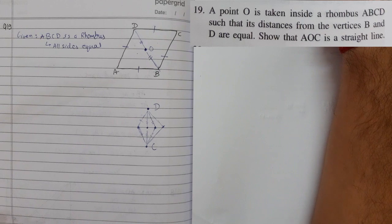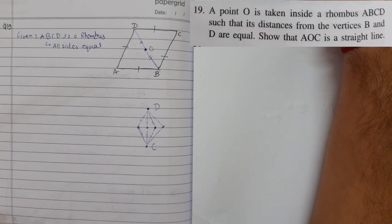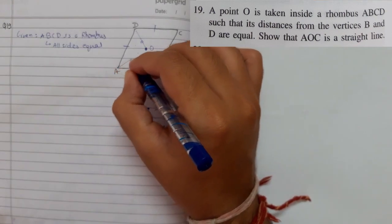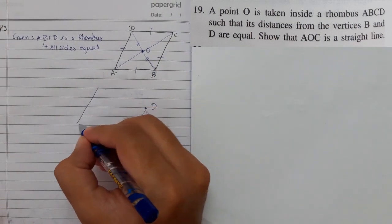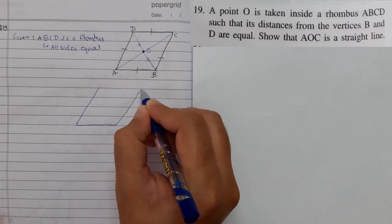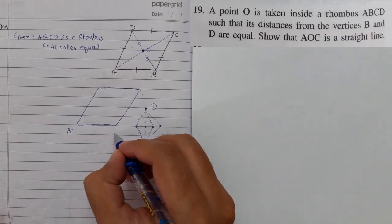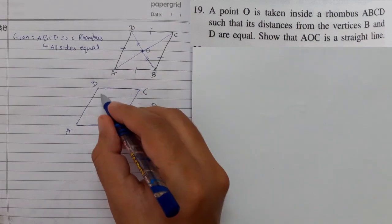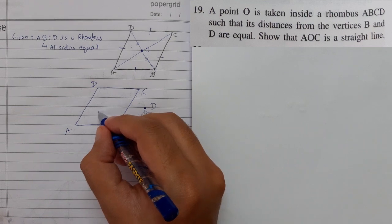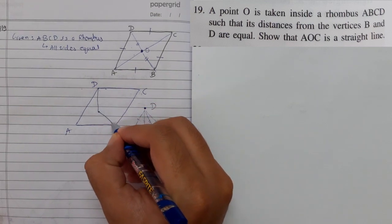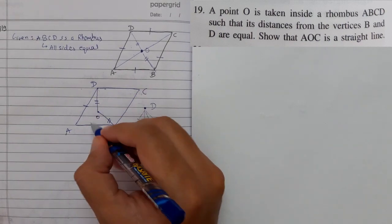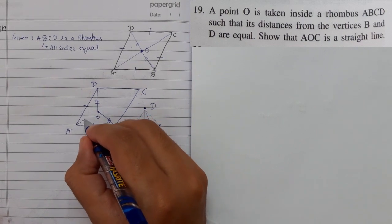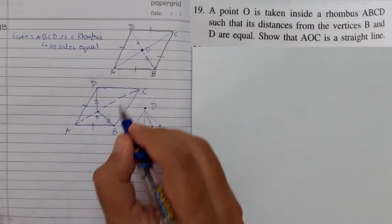So what we have to show is show that AOC is a straight line. AOC is a straight line. So let me draw another figure where I am not taking it at the center. Again A, B, C, D. So as I told it can be here, it can be here also. So that means this part is equal to this part, and this is equal to this.